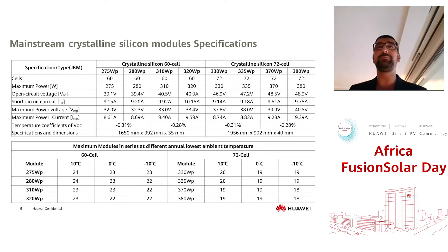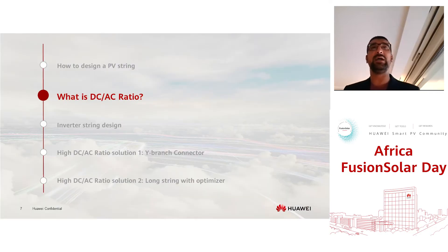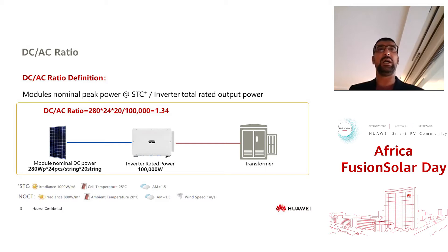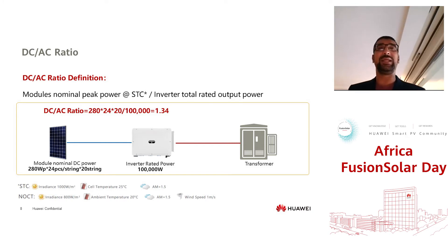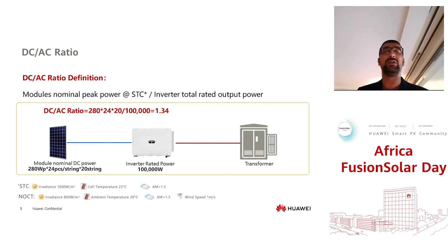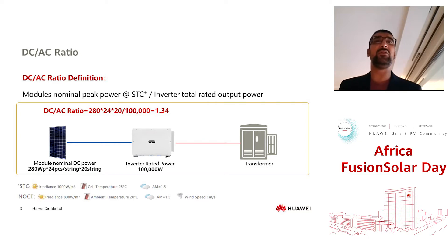If temperatures get as low as minus 10°C, that would be limited to 22 PV modules per string. The DC to AC ratio is defined as the nominal peak power at STC divided by the inverter's total rated output power. With the 280W PV modules, 24 modules per string and 20 strings into one inverter divided by the 100 kW nominal inverter output, that achieves around 1.34 — what we call a 34% oversizing ratio on the inverter. This is based on STC conditions, typically around 25°C.